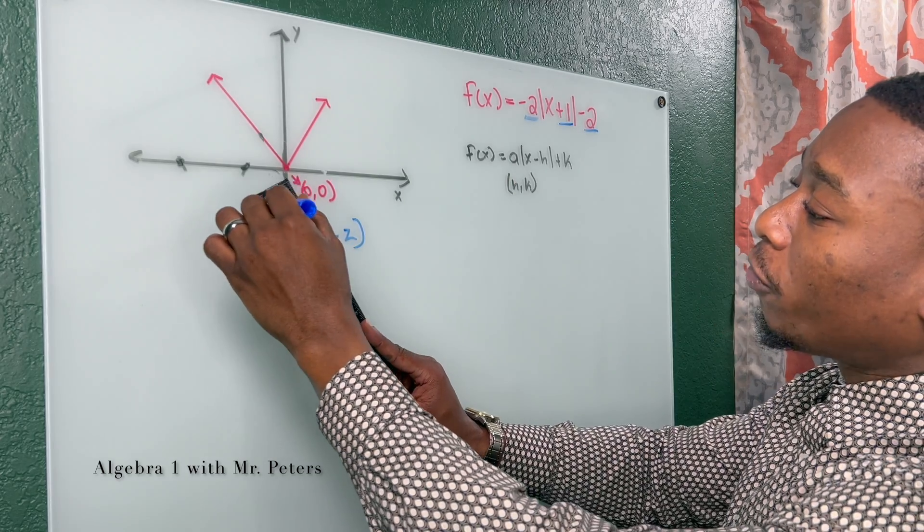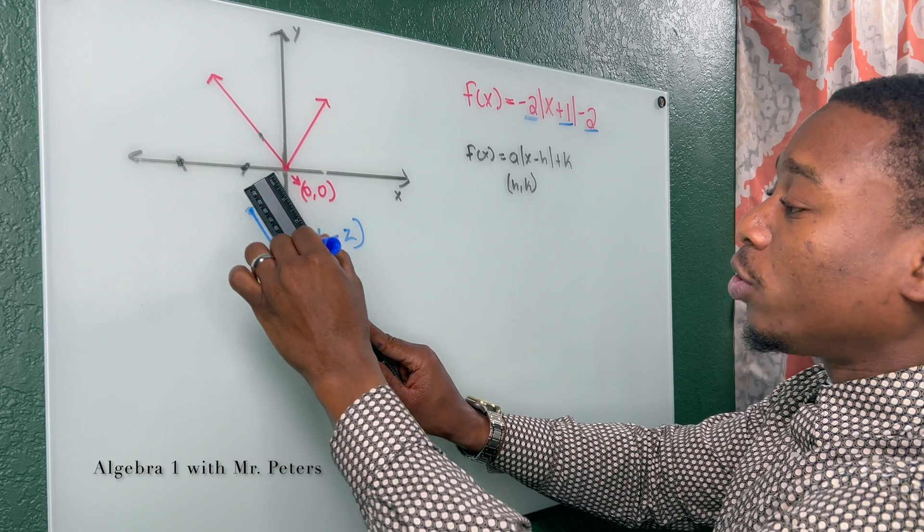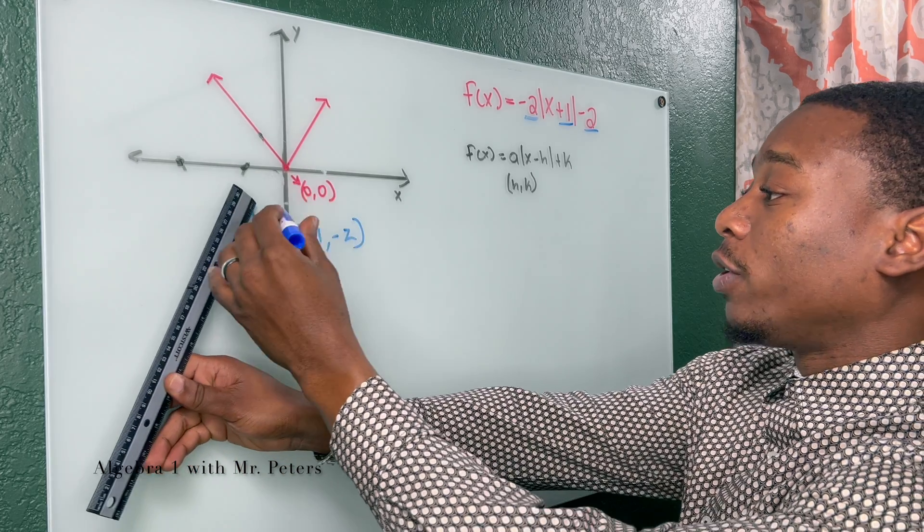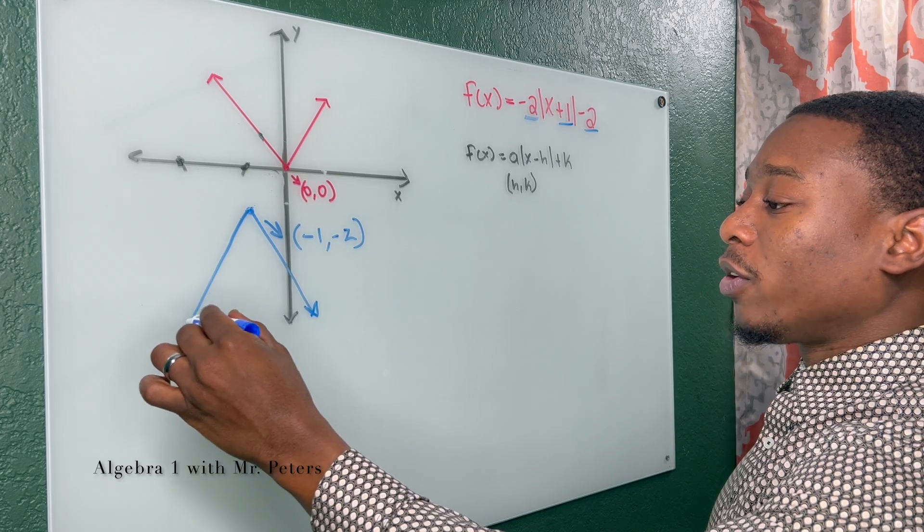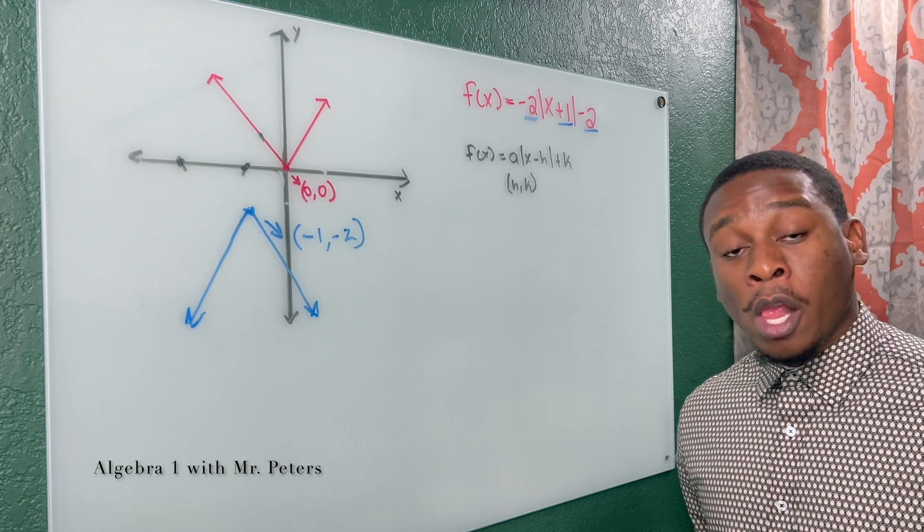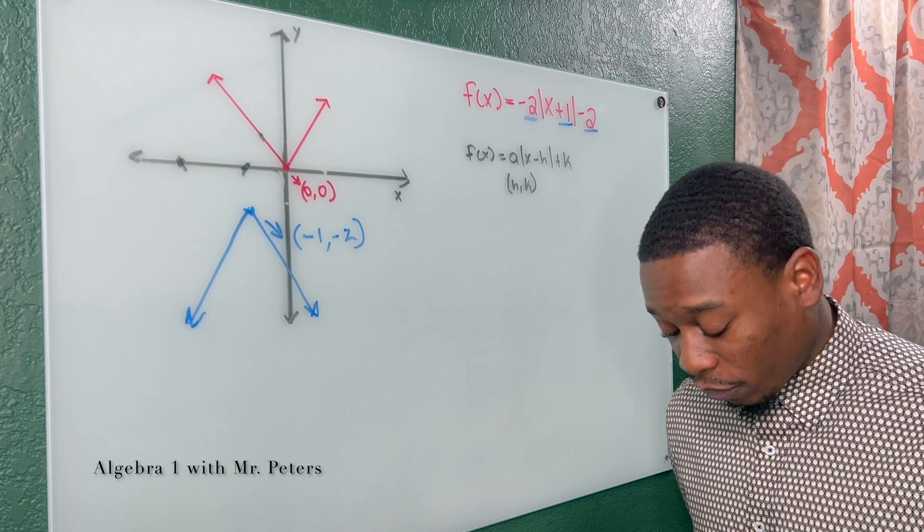Now for this video, I'm not going to focus on how to graph when we have A in front. I want to focus on something different. So this is how this graph should look. Here goes our vertex. So we were able to graph by transformation.